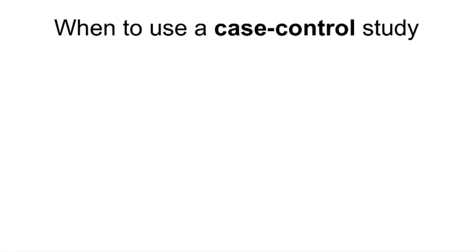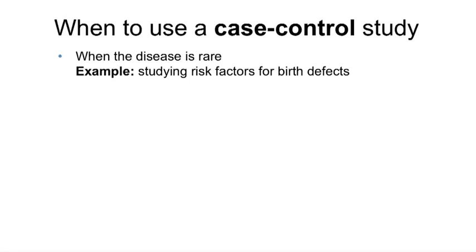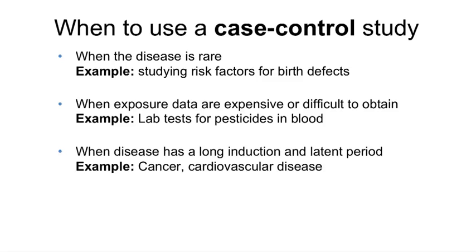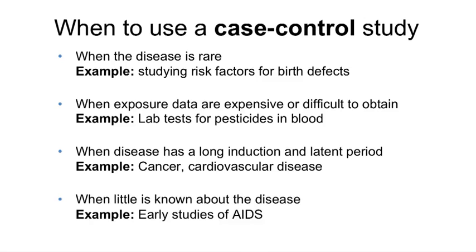Case control studies are best when the disease is rare — for example, studying risk factors for birth defects — or when exposure data are expensive or difficult to obtain, like our example with lab tests for pesticides in the blood. Case control studies are also useful when the disease has a long induction and latent period, such as cancer or cardiovascular disease, and when little is known about the disease — for example, studies of AIDS early when the AIDS epidemic began.